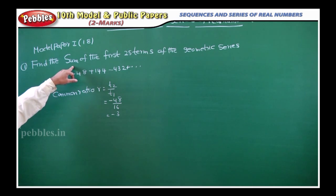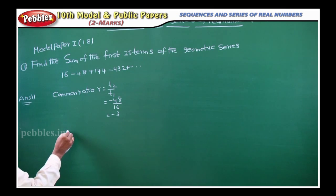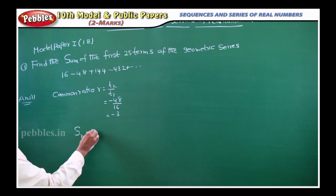Now, but they ask the sum of the first 25 terms. So S-N formula we should use. What is sum of N terms in GP? S-N is equal to A into, there are two formulas.